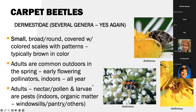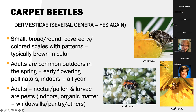The next group: carpet beetles. These are Dermestidae. They are small, broad, round beetles covered with colored scales, often with patterns — typically brown, white, and blotchy. Adults are common outdoors in the spring, and this is when they're actually pollinating. I put in here 'early flowering pollinators.' Indoors they can come out anytime because the larvae feed indoors — they're pests of our houses. The genus Anthrenus is one example. Even though these are pests indoors, they are beneficial outdoors as pollinators.